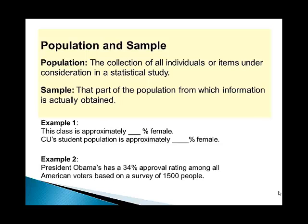The sample, on the other hand, is that part of the population from which we are actually obtaining information. In the approval rating example, 1,500 people are selected and surveyed to come up with that statistic — those 1,500 people are the sample, while all American voters would be the population. As another example, if this class were 60% female students, we might conclude that approximately 60% of our university student population are female; our class would be serving as a sample of the entire population of all students at the university.